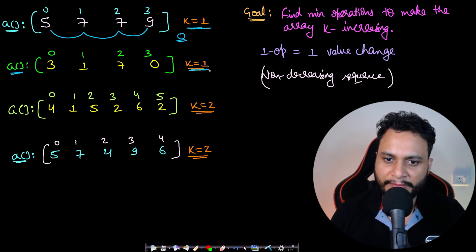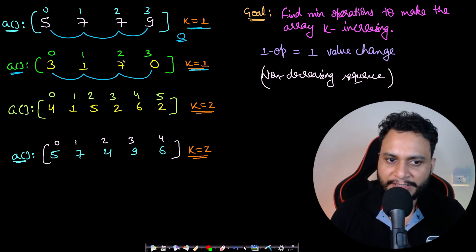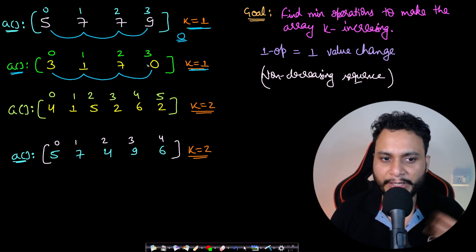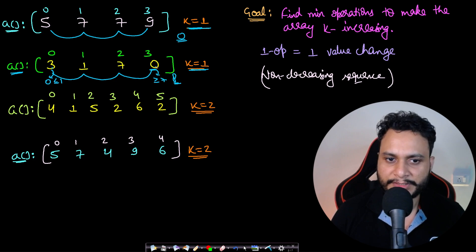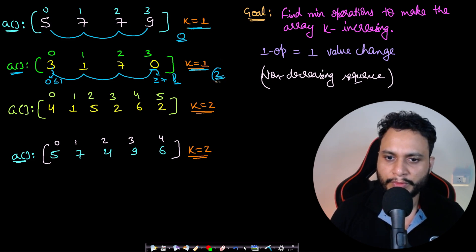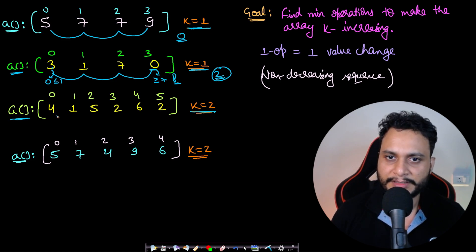In the second example, k is also 1, so you have a single list. Is 1 ≥ 3? No. Is 7 ≥ 1? Yes. Is 0 ≥ 7? No. To make it non-decreasing, change 3 to 0 (any value ≤ 1) and change 0 to 8 (any value ≥ 7). That's two operations, and the array becomes non-decreasing. We return the minimum number of operations, which is 2.